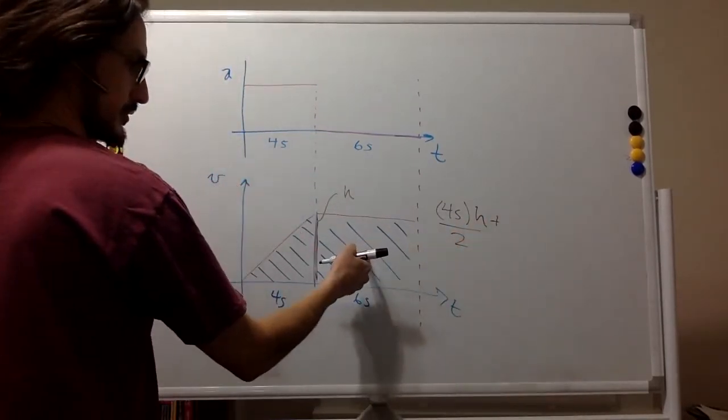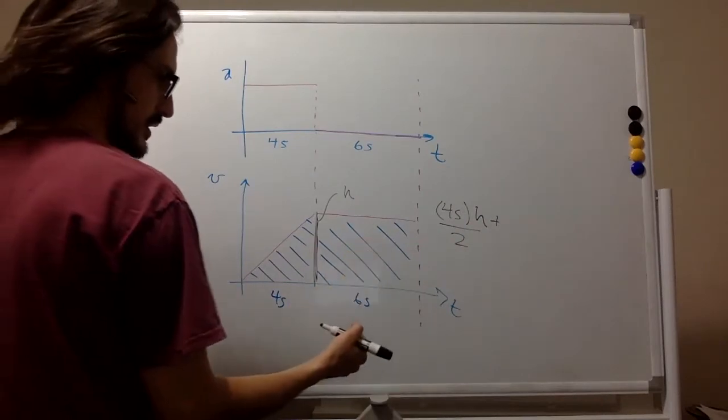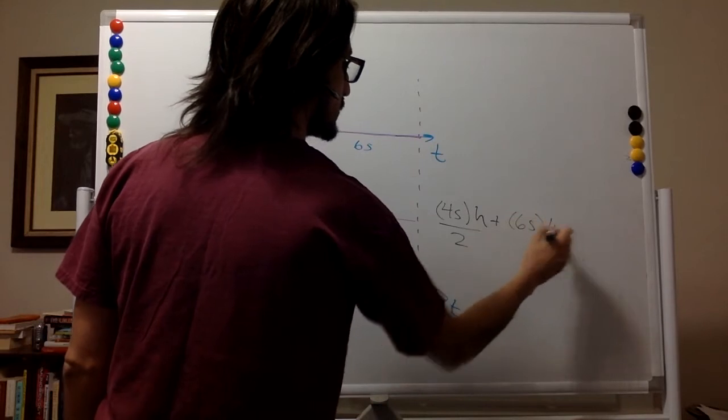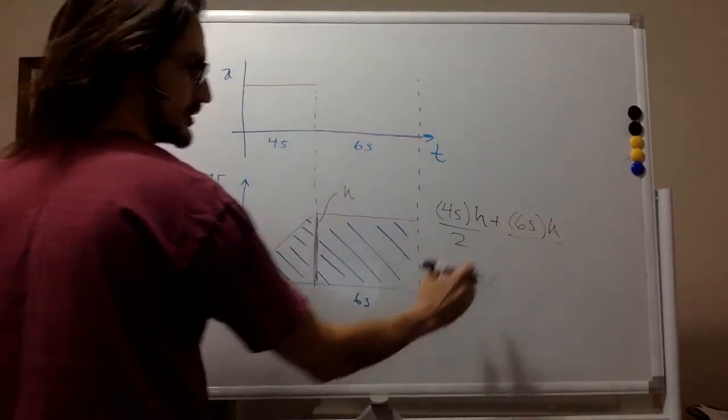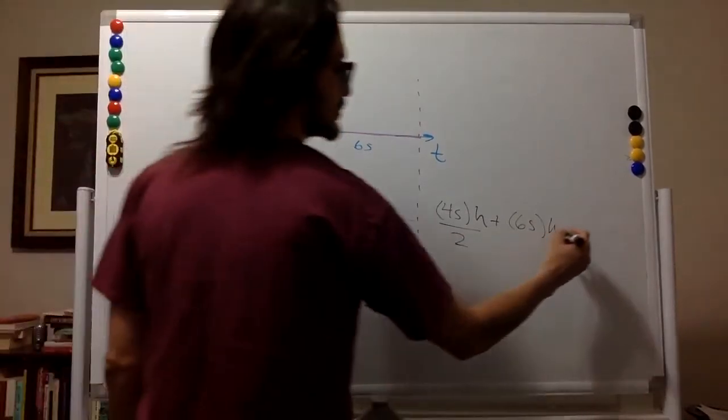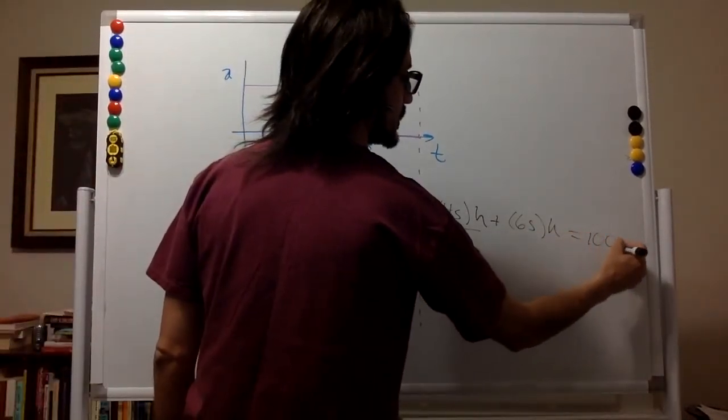And then the area under the curve of the rectangle is six seconds times h, and that's it. And the whole thing should be equal to 100 meters.